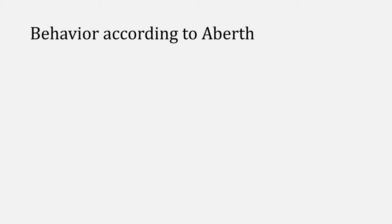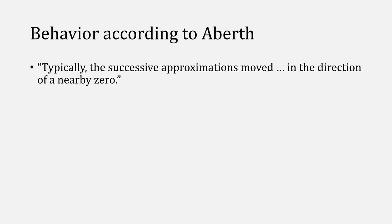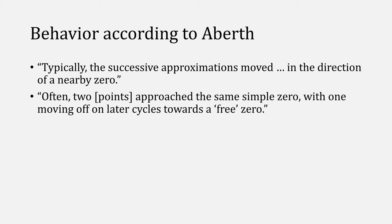Aberth makes a few keen observations about the behavior of Durand-Kerner, noting typically, the successive approximations moved in the direction of a nearby zero, and that, often, two points approach the same simple zero, with one moving off on later cycles, towards a free zero.